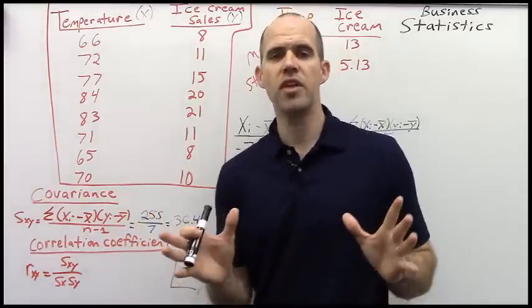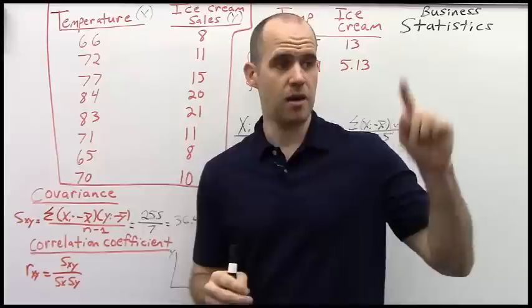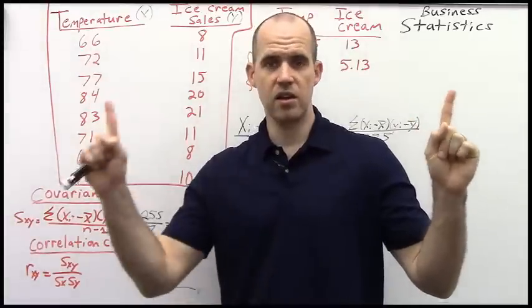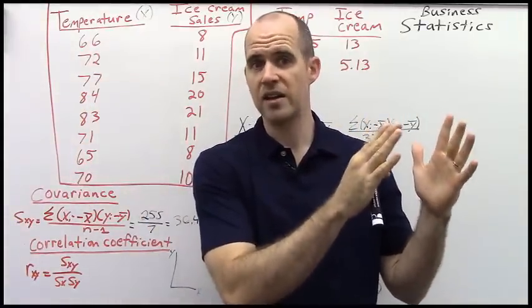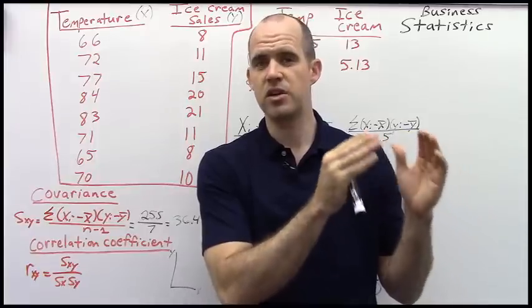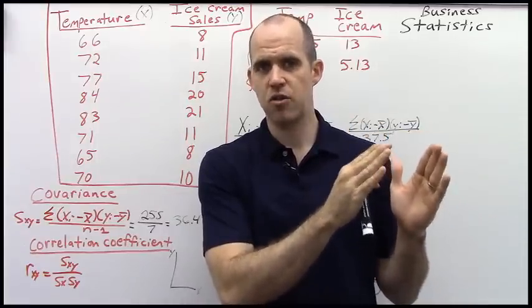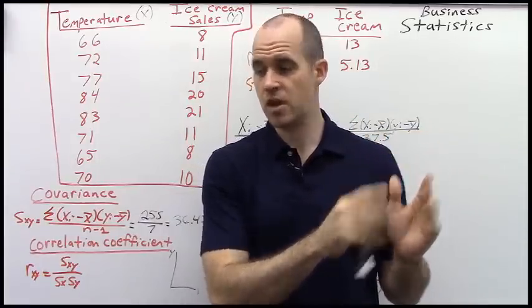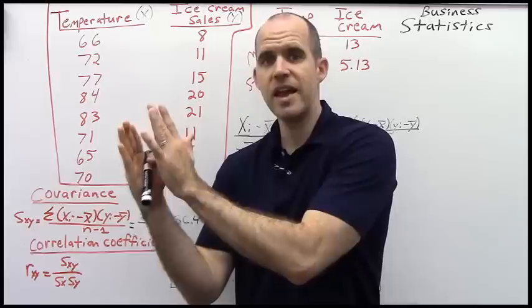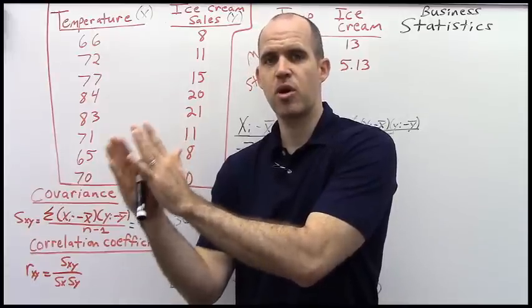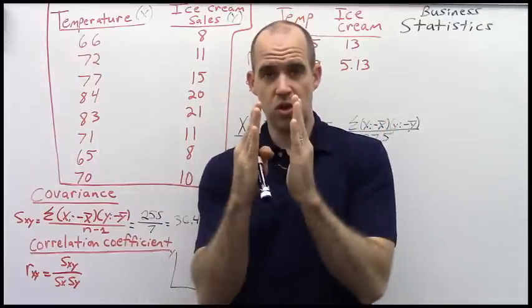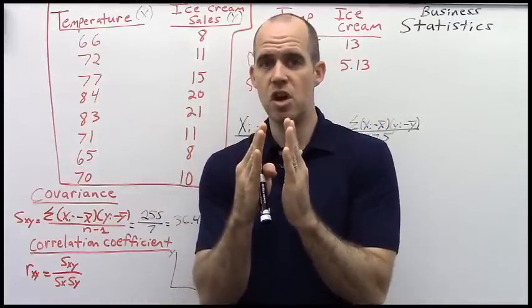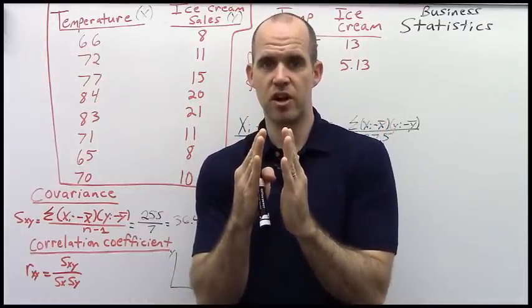So recall that the correlation coefficient goes between a positive one and a negative one. And the closer you are to a positive one, or if you're at one exactly, that means there is a perfectly positive relationship between the two variables. The closer you are to a negative one, that means there is a perfectly negative relationship between the two variables. And of course, the closer you are to zero, that means there's no relationship between those two variables.